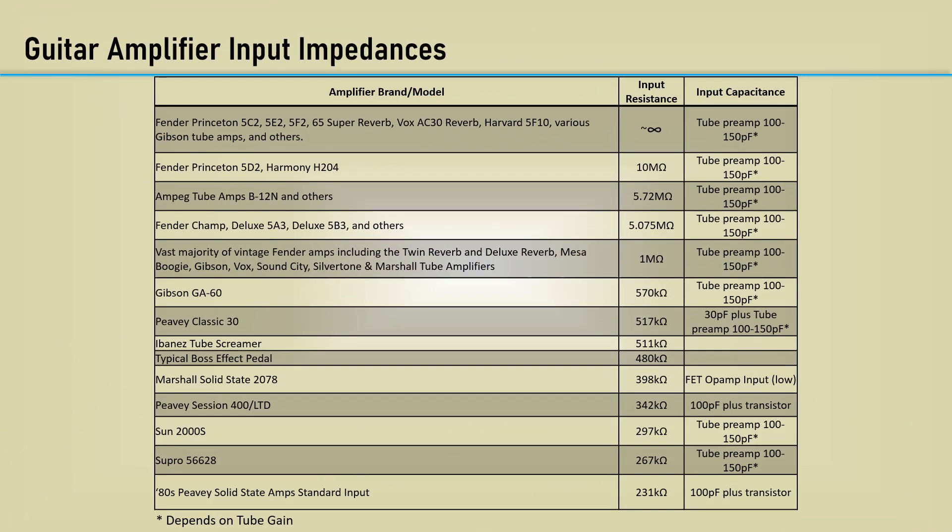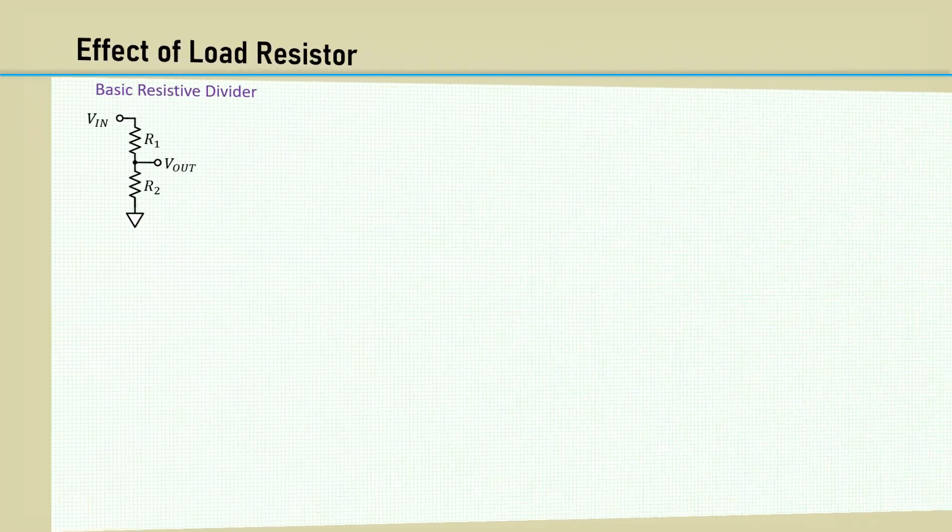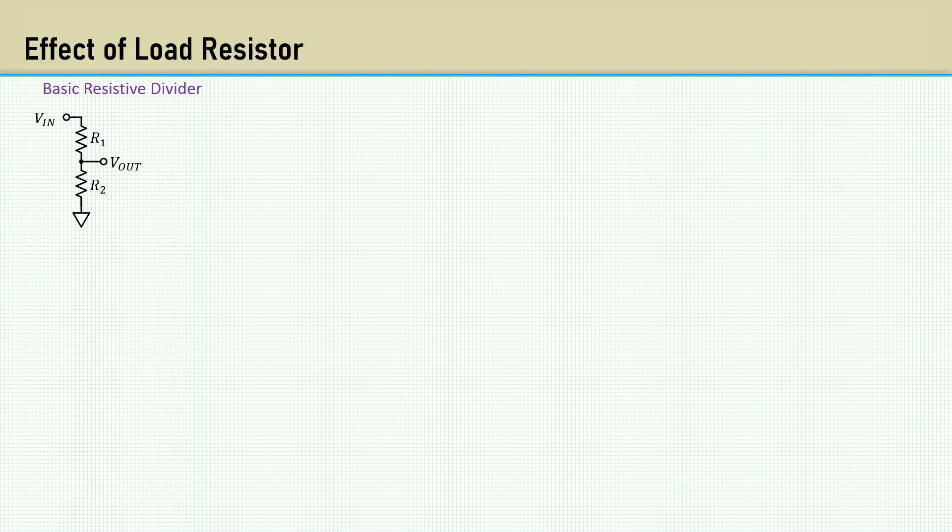Here's a chart I put together with input resistances and capacitances for various amplifiers and effects. Most tube type amplifiers have a very high input impedance ranging from around 500k and up. A typical effects pedal is around 500k. One of the lowest I found was 80s model PV solid state amplifiers having an input resistance of 231k. Having even a moderate load resistance on the wiper of a pot can have a profound effect on the effective resultant taper of the system.